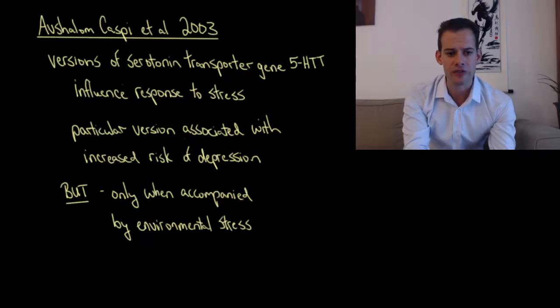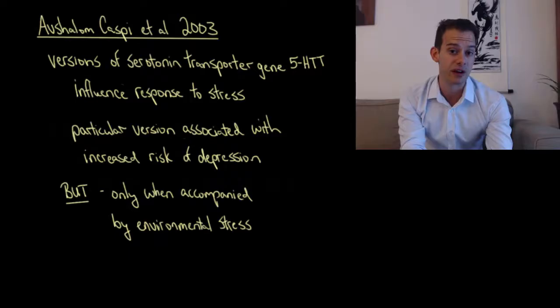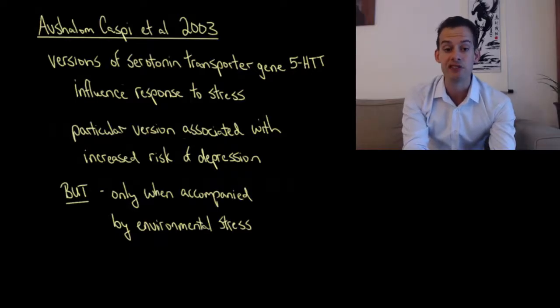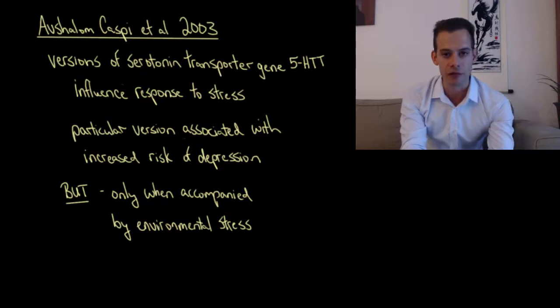What they found was that particular versions of this gene were associated with an increased risk of depressive symptoms and an increased risk of diagnosis of depression. They looked at three different versions of this gene.